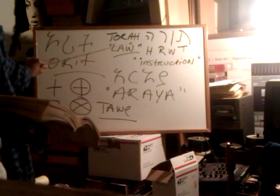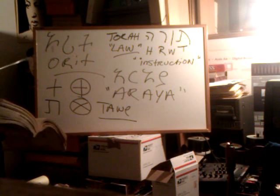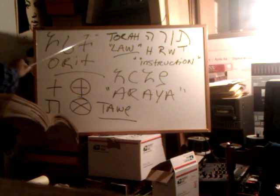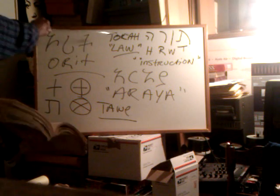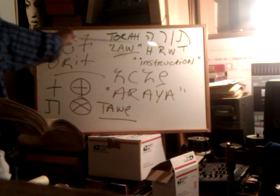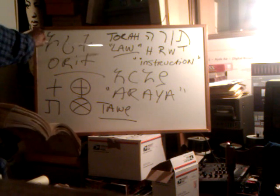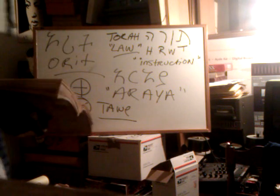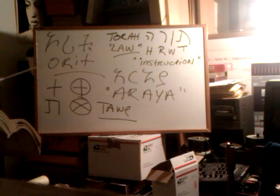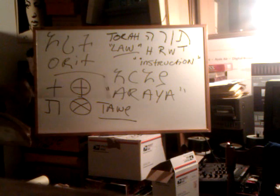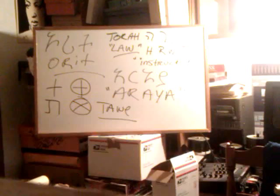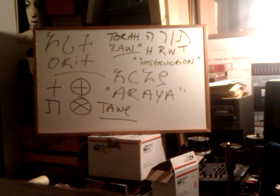So the instruction is important, the law is important. Orit is the root of it, coming from Araya. The original form Araya, to Orit, and then we get the Masoretic Torah — which nowadays Jews say is the law or the instruction. But we know the root of Orit comes from that perfect example or model of the vision of God and Christ, or the vision of Yahweh and Moshe.